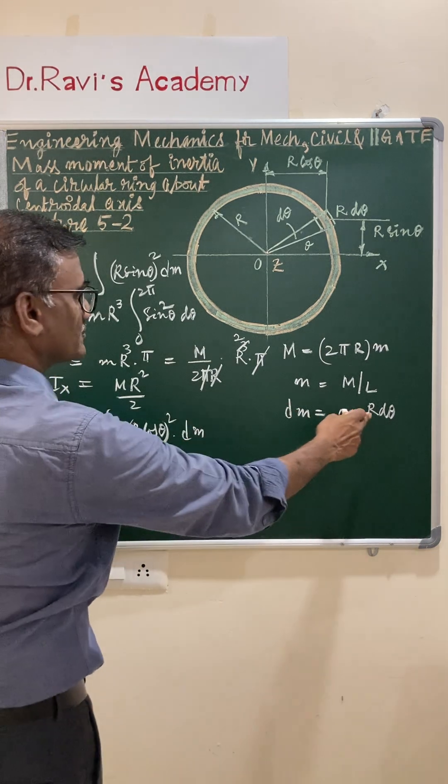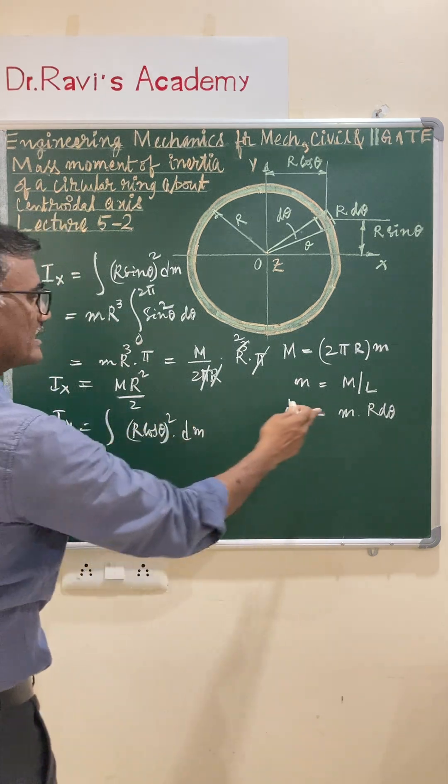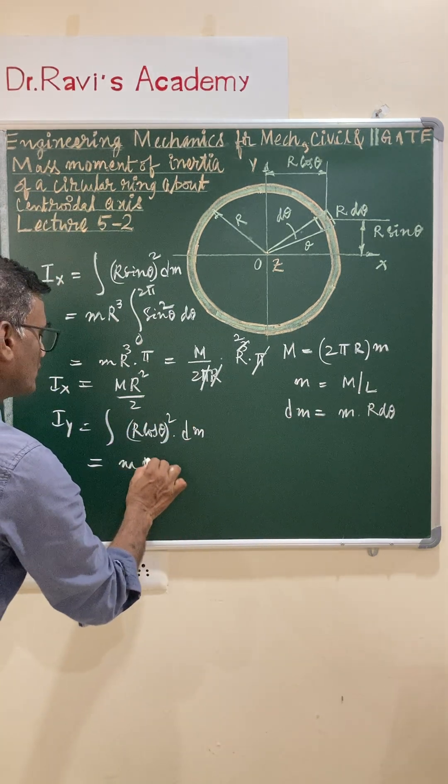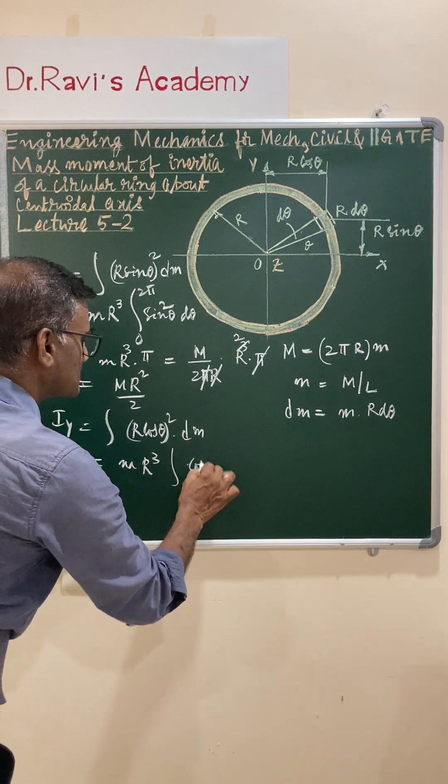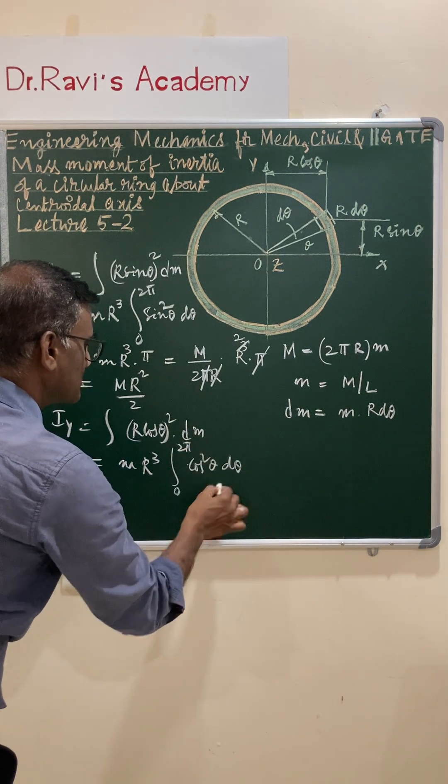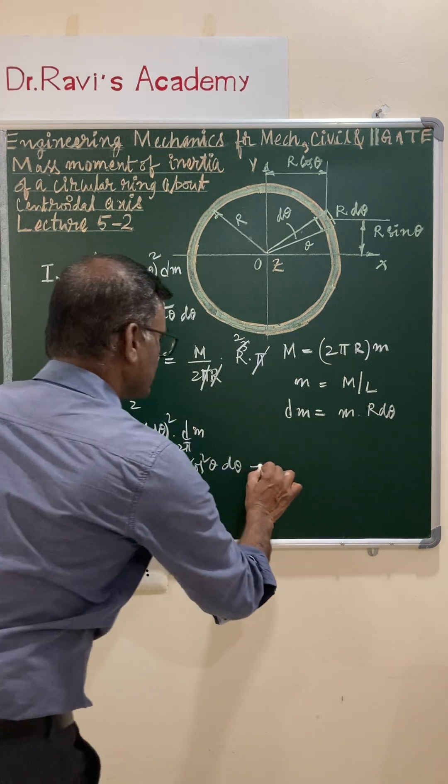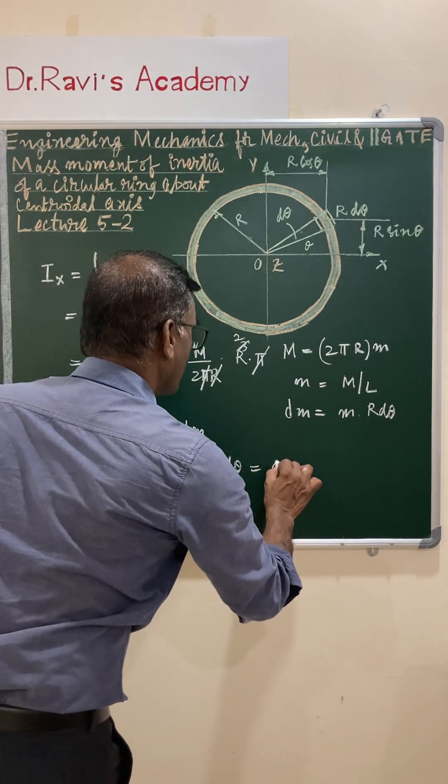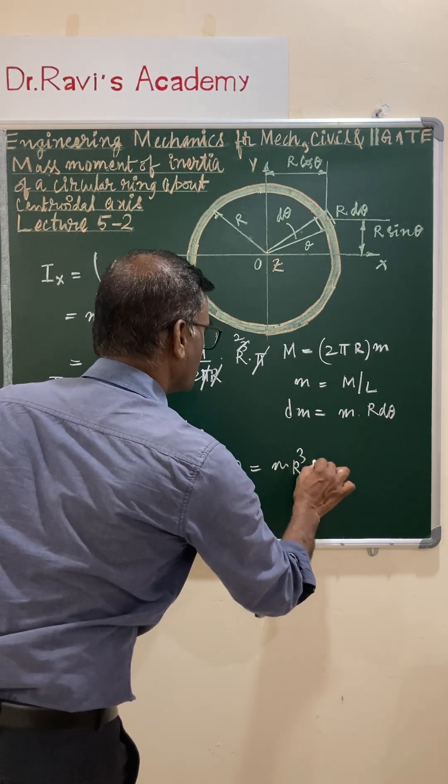Substitute this and you have r² and one r, that is mr³ which is outside integral cos²θ dθ, 0 to 2π. This value is also π, and this becomes mr³ into π.